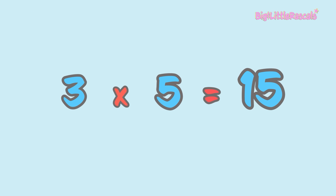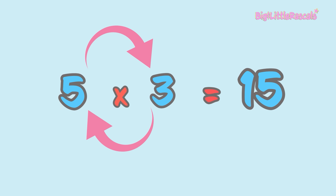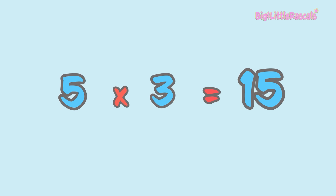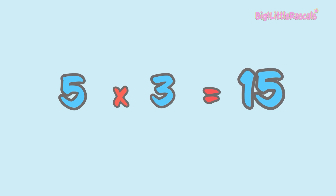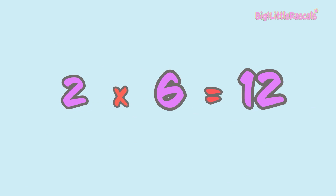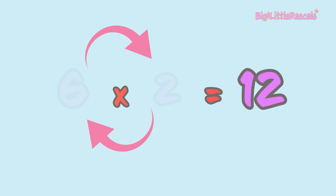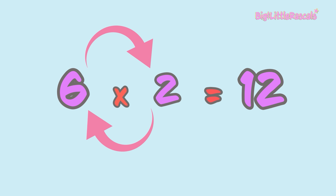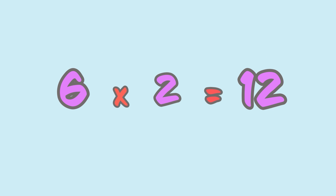Now, in multiplication, if you swap the position of the two numbers — 3 times 5 to 5 times 3 — it will still give you the same result of 15. Let's see another example: 2 times 6 equals 12, and this is the same as 6 times 2 equals 12 as well.